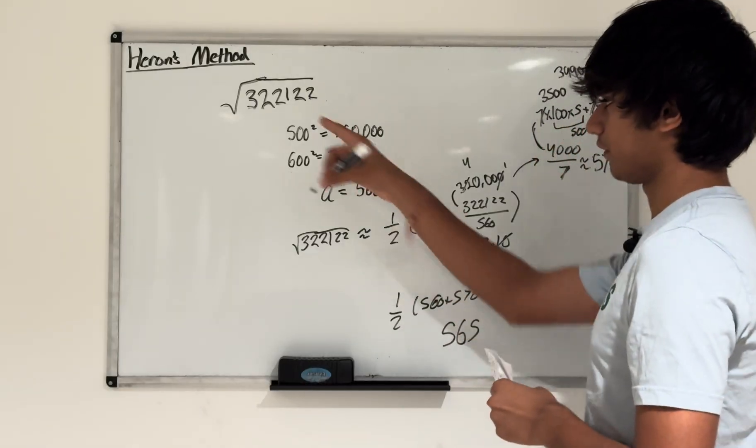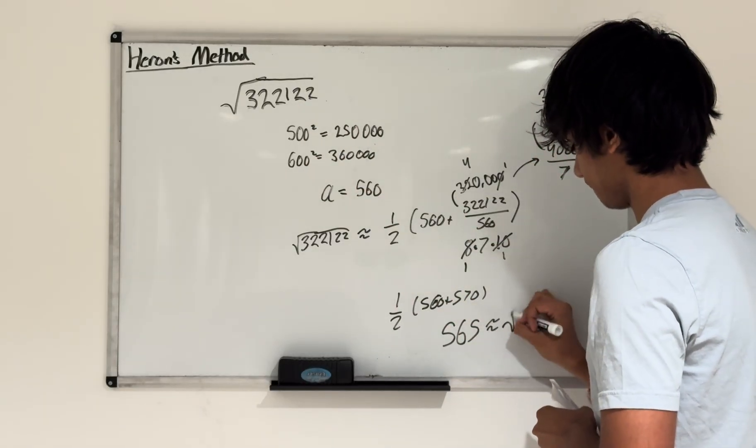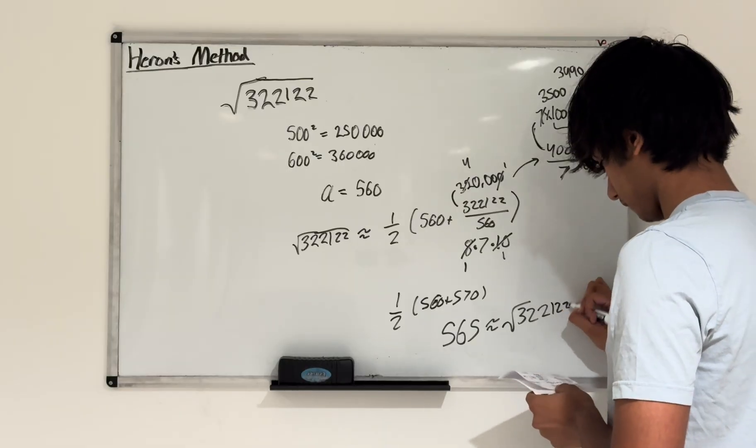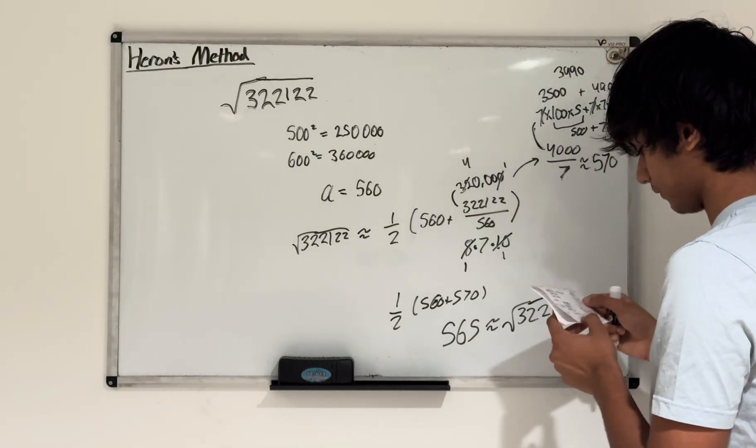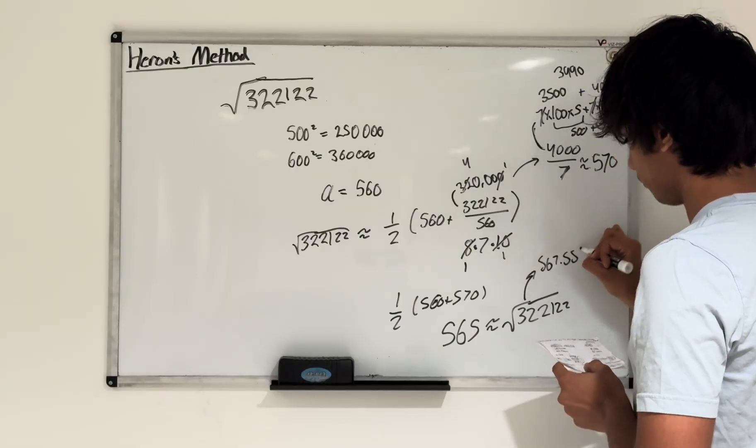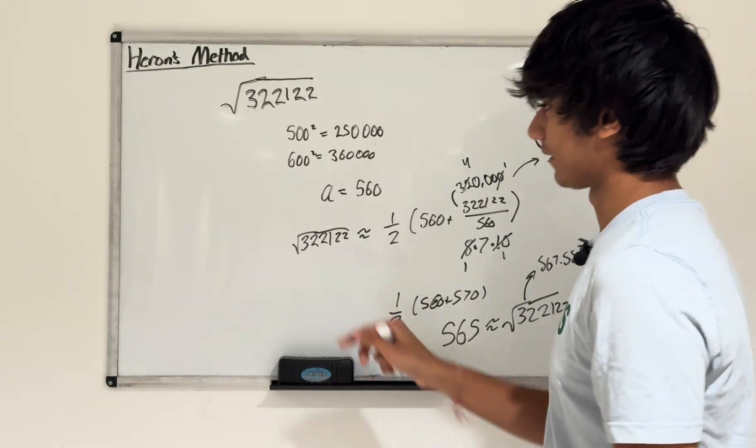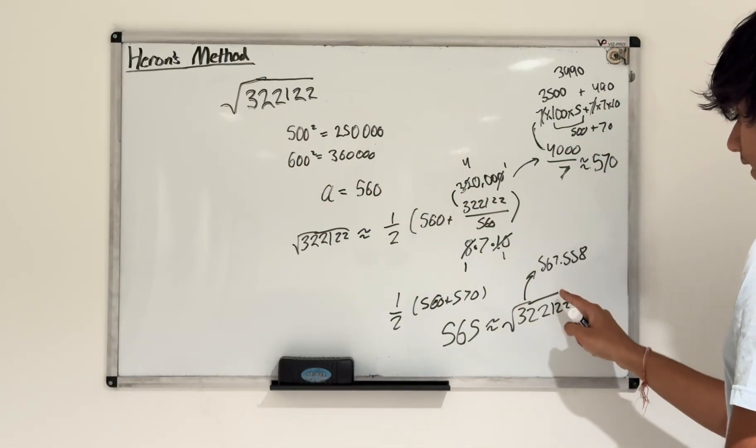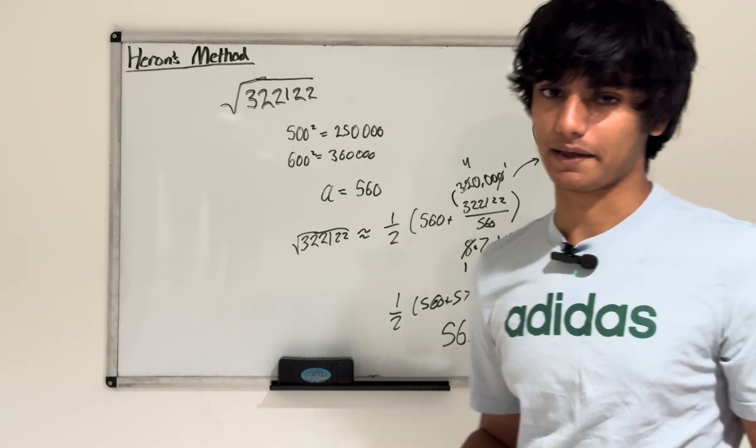The average of that is equal to 565. So my estimate for this value, the square root value, is 565. The actual value for the square root is 567.558. So we were about 2.5 off, which if you think about it, isn't that bad, because this is a huge number in the hundreds of thousands. Being only 2.5 off is actually a pretty good amount.